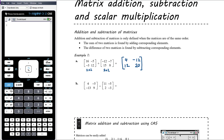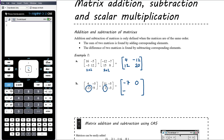Part B: subtracting the corresponding elements. Again we've got two-by-two minus two-by-two, so we'll end up with a two-by-two result. Top left minus top left: 4 minus 11 is negative 7. Top right minus top right: negative 5 minus negative 5 is 0. Bottom left minus bottom left: negative 13 minus 12 is negative 15. And 9 minus negative 3 is 9 plus 3, which is 12.